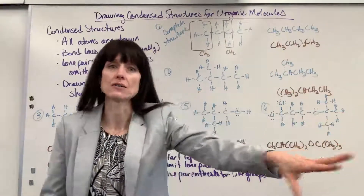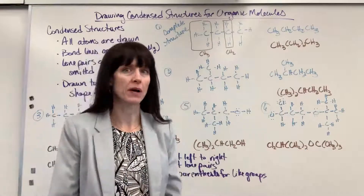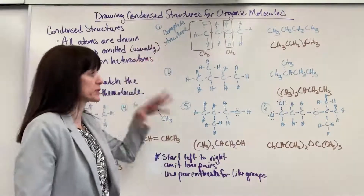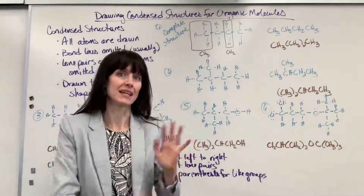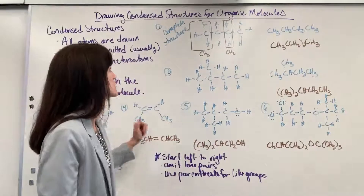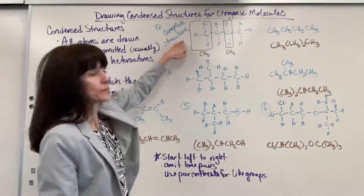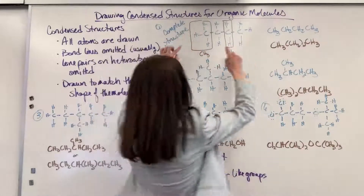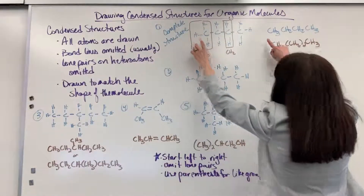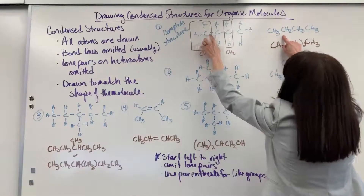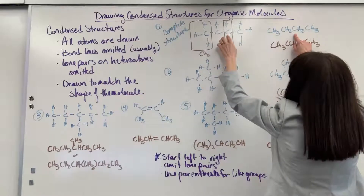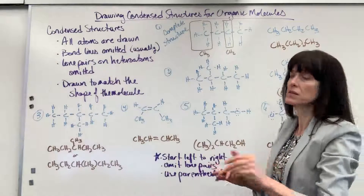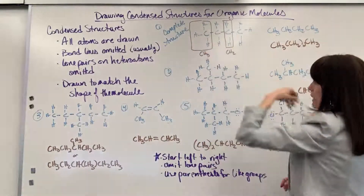When we write everything out — all the lone pairs, all the bonds — that is called the complete structure. I've written all the complete structures and we're going to write the condensed structures. Here we have butane. The condensed structure for this: notice there's a carbon with three hydrogens — CH3, CH2, CH2, CH3. I took off those bonds and went from left to right.